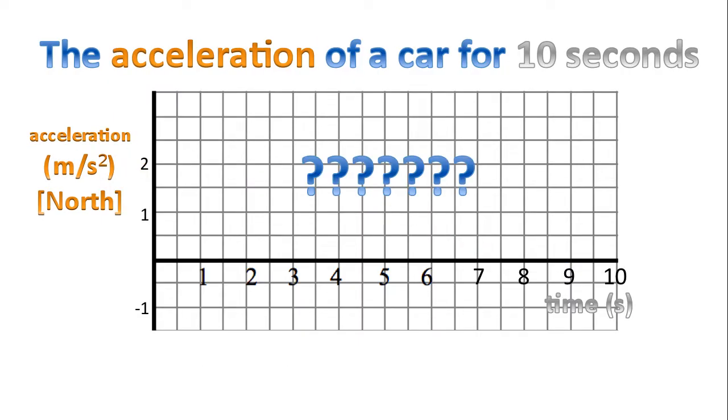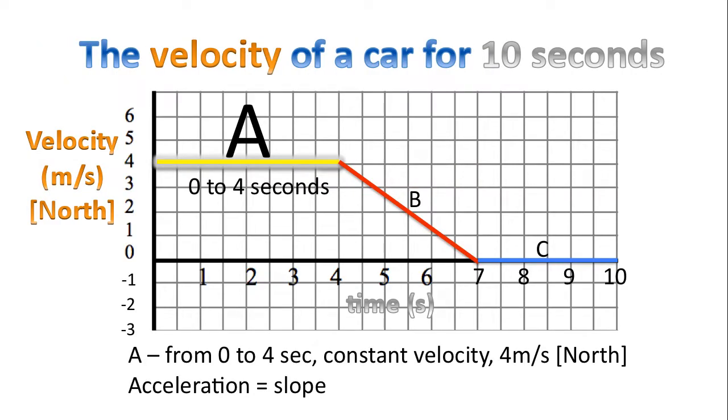So how do we go from a velocity-time graph to an acceleration-time graph? What do we have to do to get there? For starters we need to calculate the acceleration. To do that we need to calculate the slope of each section of the graph. We need to calculate the slope for each line.